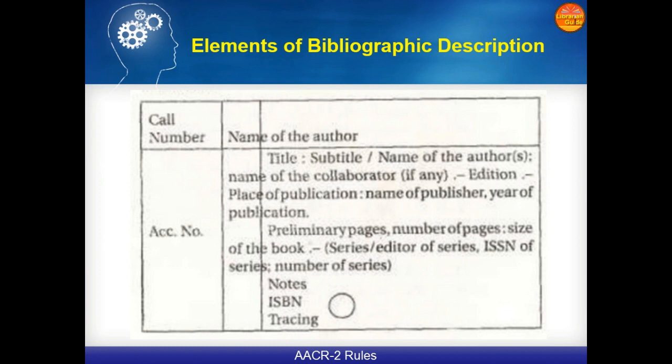The name of the collaborator, if any, is then written. Then: dot, space, hyphen, space — edition, space, dot, hyphen, space — place of publication, colon, name of publisher, year of publication, which is separated by a comma. Then we describe the physical information of the book.